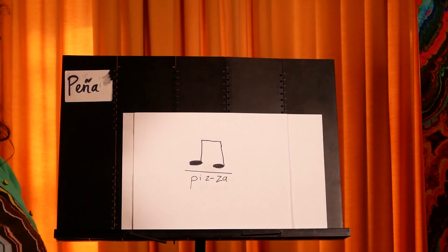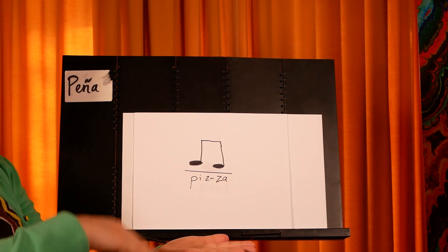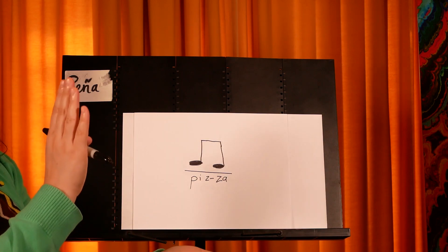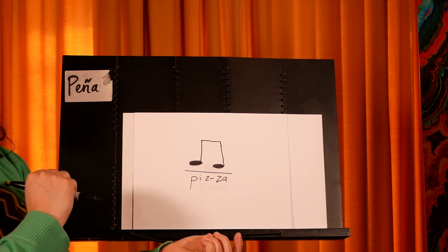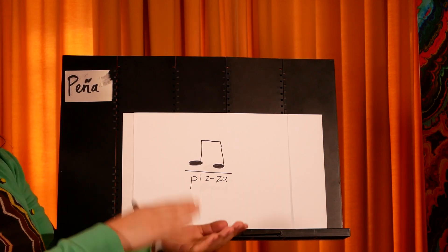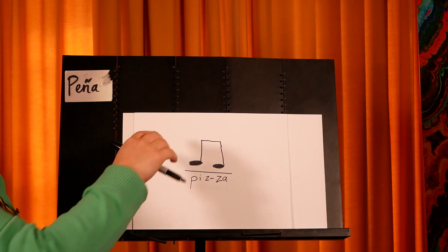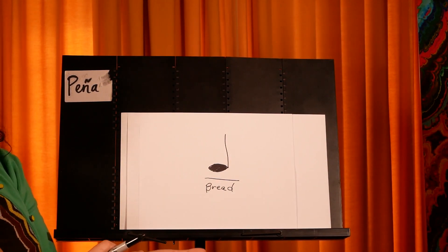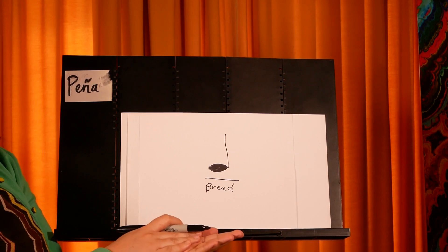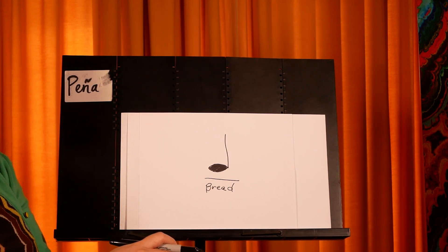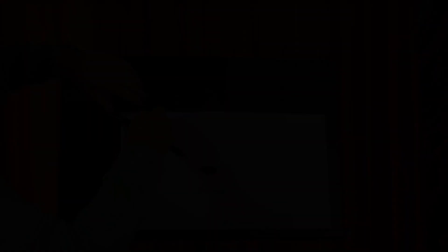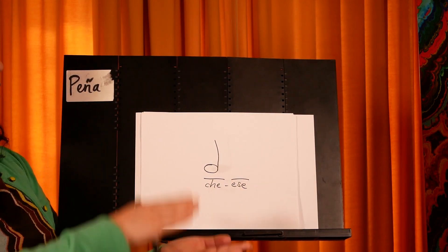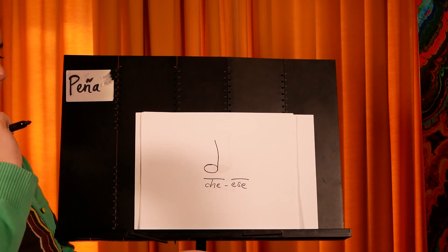Before we put them together, we need to practice them by themselves. Let's try pizza — it'll be like this: pizza. I said two different sounds, but I didn't tap two different sounds. That one's going to take some practice. The next one was bread — it's one sound on one beat line: bread. I feel like that one is the easiest one. And here's cheese — remember, it's two beat lines: cheese.